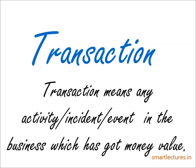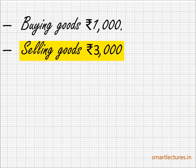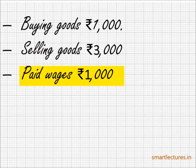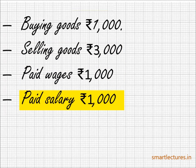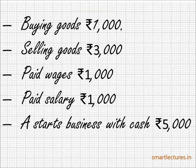For example, buying goods for Rs. 1000, selling goods for Rs. 3000, paid wages Rs. 1000, paid salary Rs. 1000, A starts business with cash Rs. 5000, etc. All these activities or incidents or events are called transactions.